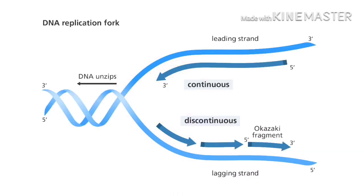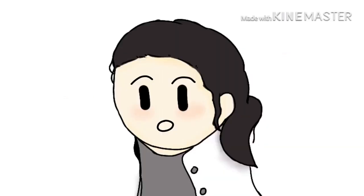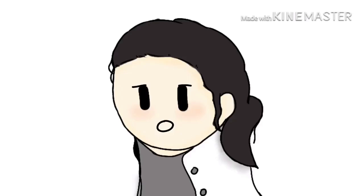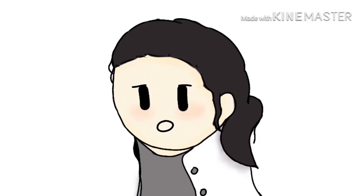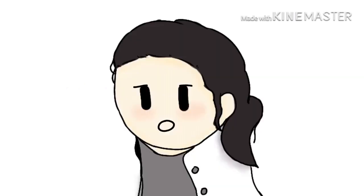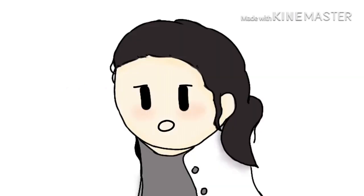Enzymes known as helicases unwind the double helix by breaking the hydrogen bonds between complementary base pairs. With the primer as a starting point for the leading strand, a new DNA strand grows one base at a time. The existing strand is a template for the new strand.